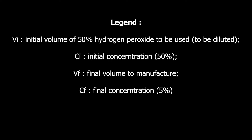Giving out the legend — VI stands for the initial volume of 50% hydrogen peroxide to be used, in other words the concentrated volume we are going to dilute. CI stands for the initial concentration; in this case our initial concentration is 50%.